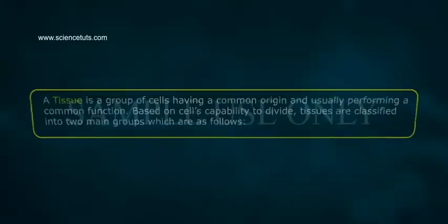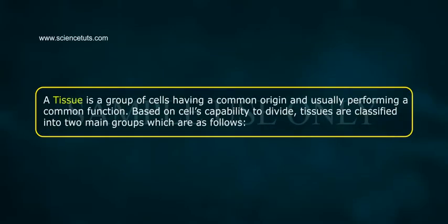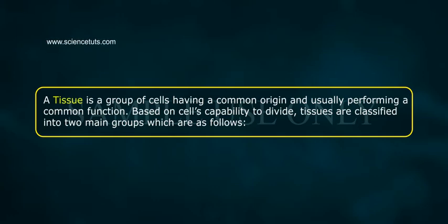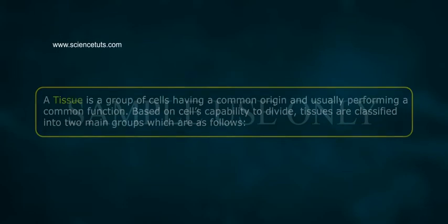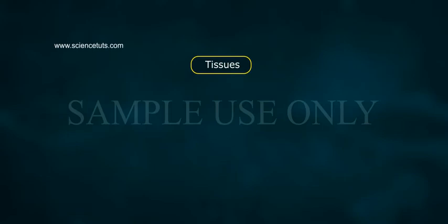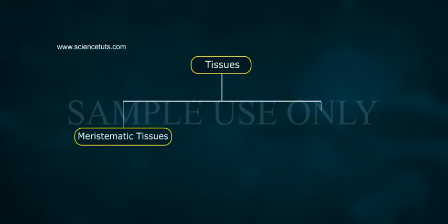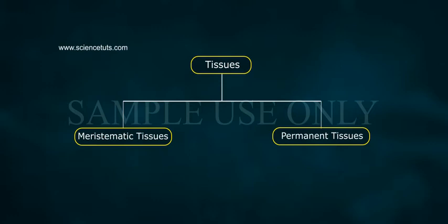Tissues. A tissue is a group of cells having a common origin and usually performing a common function. Based on cells' capability to divide, tissues are classified into two main groups: 1. Meristematic tissues and 2. Permanent tissues.